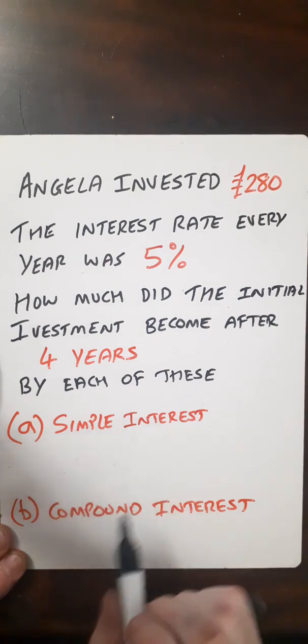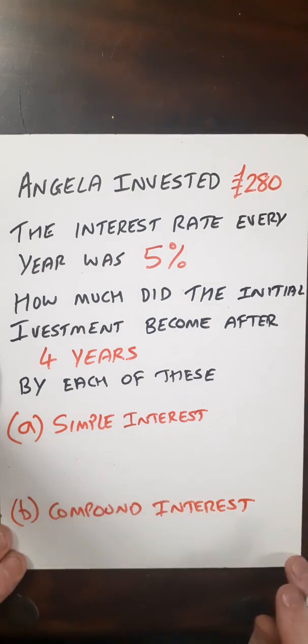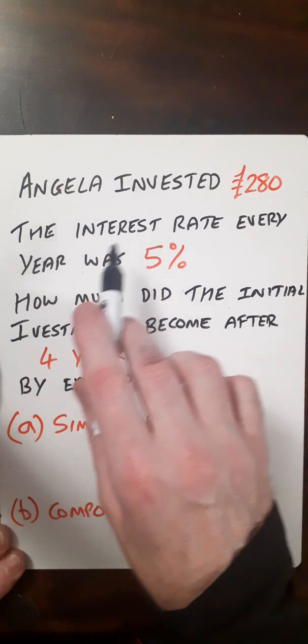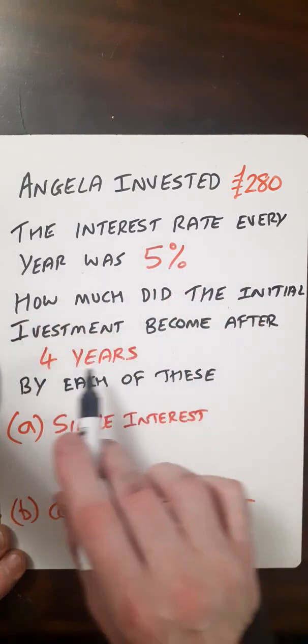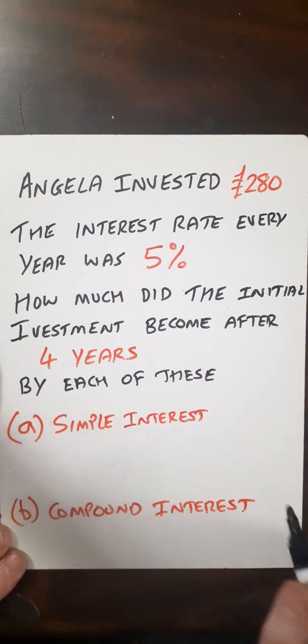So here we're going to look at the difference between simple interest and compound interest. Angela invested £280. The interest rate every year was 5%. How much did the initial investment become after four years for either of the methods?